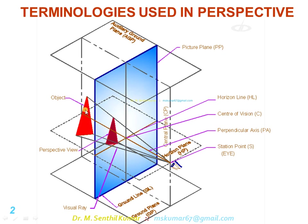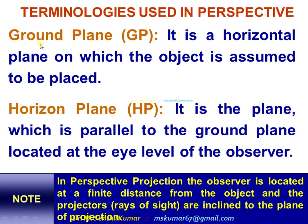Now we see this triangle — the object — and the observer eye point. Through three corners of the triangle, draw lines joining and connecting them to the eye point, so they converge at the eye point. When you draw a line connecting the object points with the eye point, they intersect the picture plane at these points. If you join these three points you will get an image, and that image is nothing but the perspective view or perspective projection of that particular object.